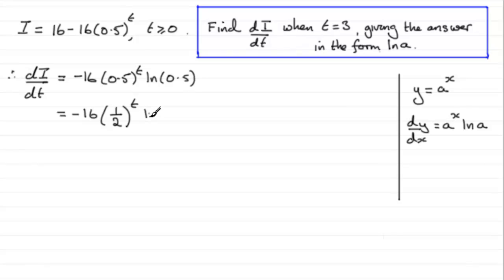And then we've got natural log of a half. So when we substitute t equals 3 into this, when t equals 3, we've got that di by dt equals minus 16 multiplied by a half to the power 3, and then the natural log of a half.